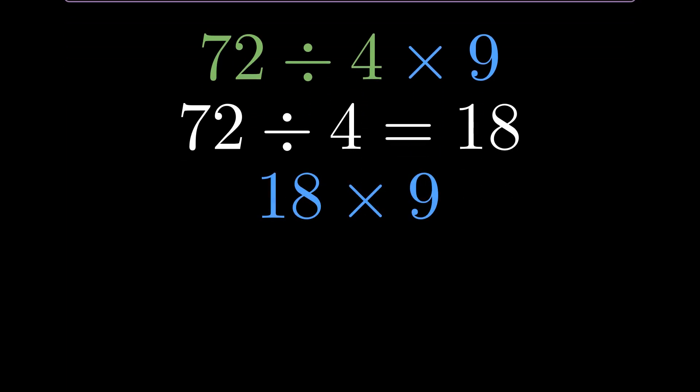72 divided by 4 equals 18. Now we have 18 times 9, which equals 162. A completely different answer.